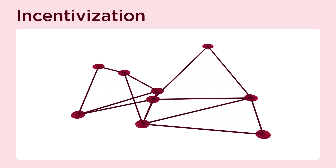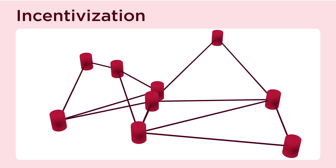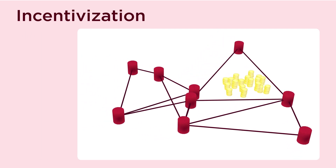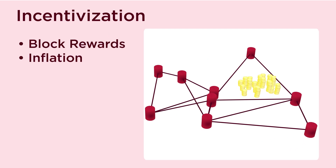Last is incentivization. Let's say you have blockchain data that you want decentralized and replicated all across the world. You need a reason — primarily money — for people to run your nodes. This is in the form of block rewards, inflation, transaction fees, grants, etc. Another thing to keep in mind: all blockchains have data availability layers. Regardless of Bitcoin, Ethereum, or Cosmos, they all have data availability layers. It's core to blockchains — blockchains require data availability to work.